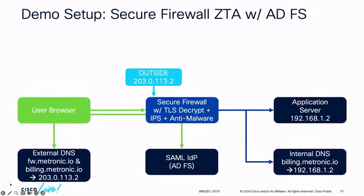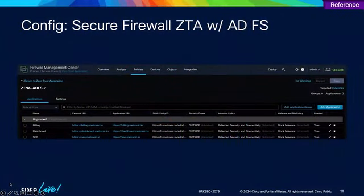Here's a quick demo setup. This is a basic environment with Secure Firewall Zero Trust Access. I have a user browser pointed to an external DNS server with a couple DNS records — one for the firewall itself and one for the actual application. Both point to the external interface on Secure Firewall. The firewall also has a port open so the user can reach the IDP, which in this case is Azure Active Directory Federation Services. On the inside, I have an application server and internal DNS. The configuration used for the demos is inside the reference slides if you want to look at how things were configured.